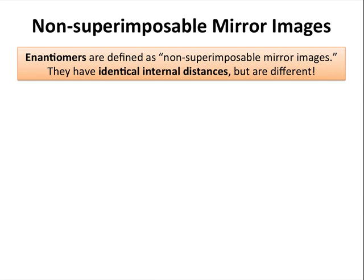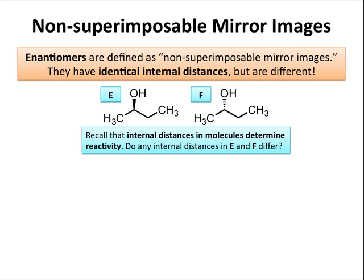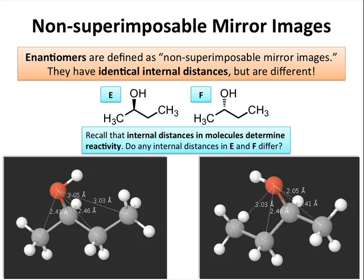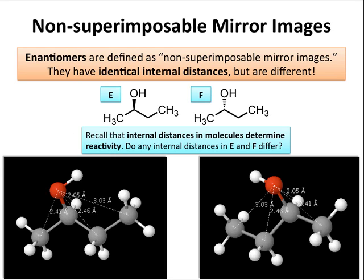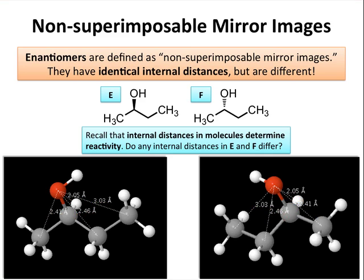One special property of enantiomers is that they have identical internal distances, but they're still not superimposable. Consider the two molecules E and F. The internal distances in molecules determine their reactivity, so it would be interesting if these two molecules had identical internal distances. In fact, the distances in E and F are exactly the same, as shown: 2.41, 2.41, 2.05, 2.05, 3.03, 3.03, 2.46, 2.46. If you measured other internal distances in both molecules, you would get identical numbers. Therefore, the chemical reactivity, energy, and chemical properties of E and F we would expect to be essentially identical.